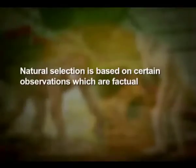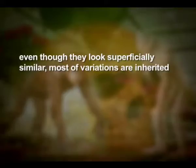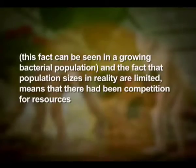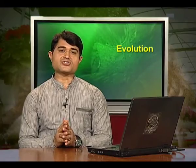It is possible that the work of Thomas Malthus on population influenced Darwin. Natural selection is based on certain factual observations. For example, natural resources are limited. Populations are stable in size except for seasonal fluctuations. Members of a population vary in characteristics — in fact, no two individuals are alike, even though they look superficially similar, and most variations are inherited. The fact that population size will grow exponentially if everybody reproduces maximally can be seen in a growing bacterial population. Since population sizes in reality are limited, there is competition for resources. Only some survived and grew at the cost of others that could not flourish.